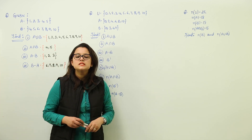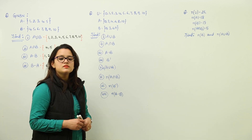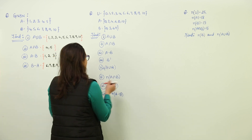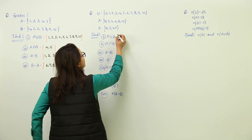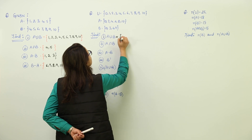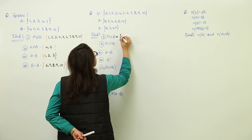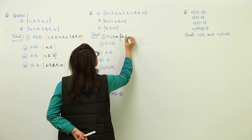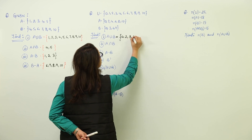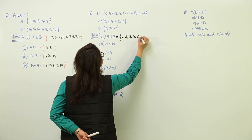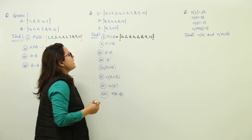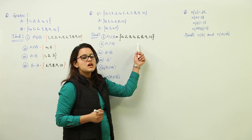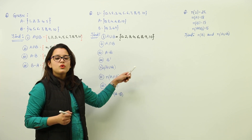A union B means the set containing elements which are either present in A or present in B. So the elements would be equal to 0, 2, 3, 4, 6, 8, 9, 10. You can check that the elements present in these sets are either present in A or present in B.